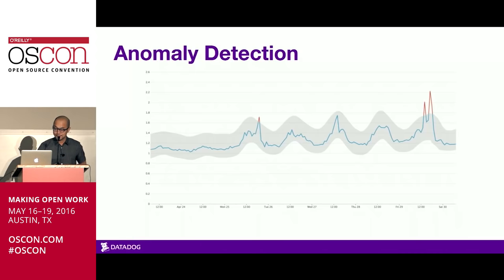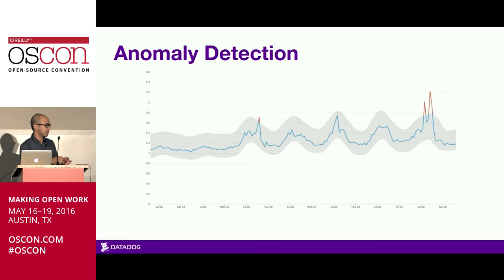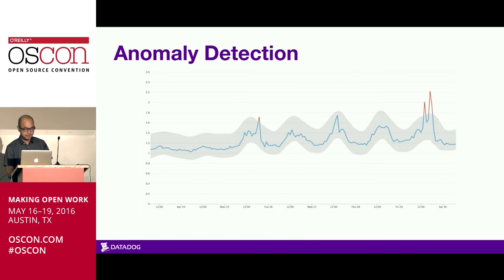For anomaly detection, we learn if a metric deviates from what we think it should be doing based on its past behavior. We represent this by drawing an envelope around the time series — an upper and lower bound for expected behavior — and any time it goes outside that envelope, we call it an anomaly, shown visually in red. This is great for metrics that are trending up and down or that have seasonal behavior.